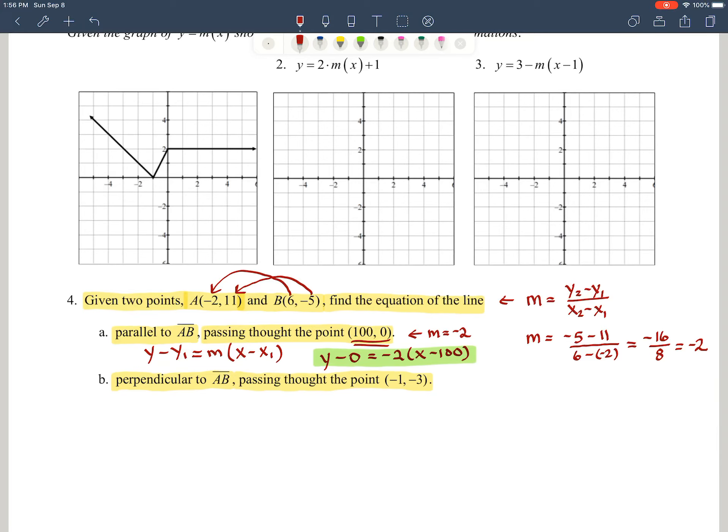Well, remember, perpendicular slopes are negative reciprocals of each other, or when you multiply them, you get negative 1. So when we look at it here, negative 2 times our new slope that we don't know should equal negative 1.